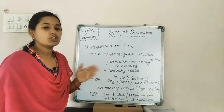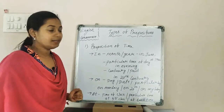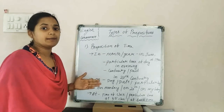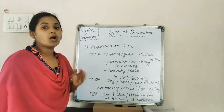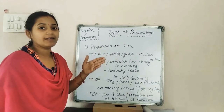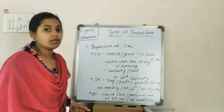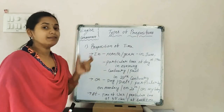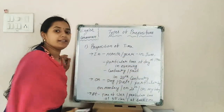When we are talking about a month, we use 'in' before that month. Similarly, when talking about a year, we say 'in' — for example, I was born in 1985. So in is used for months and years. Examples: in June, in 1986.